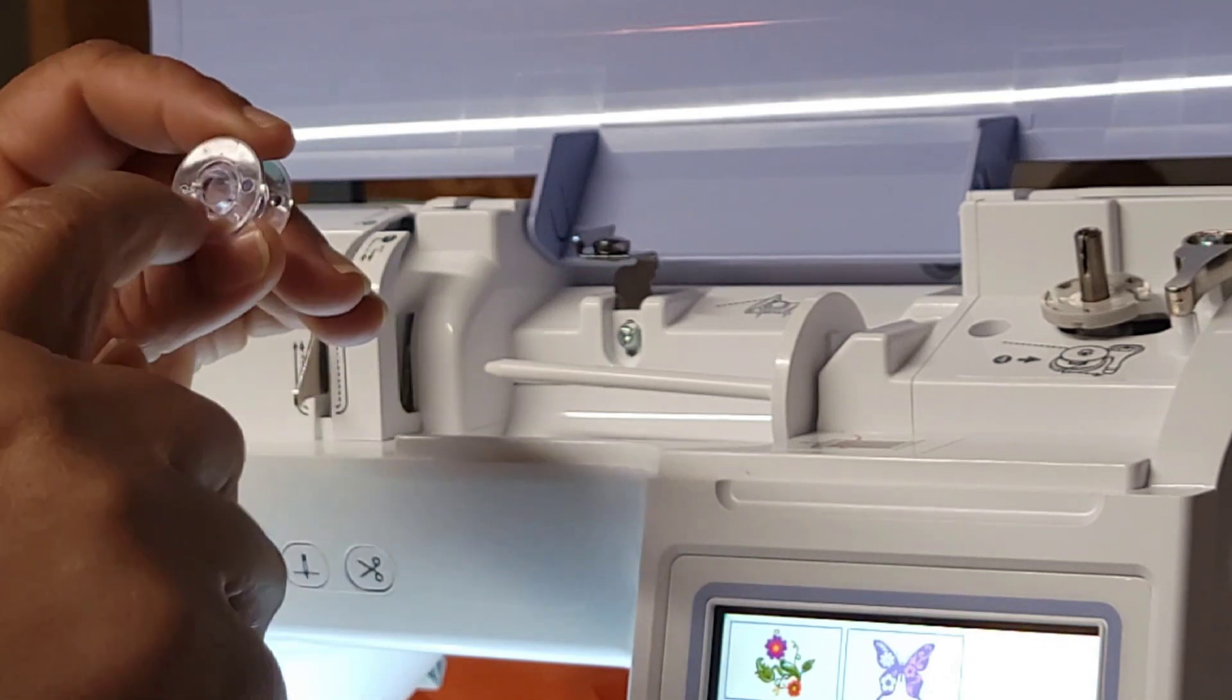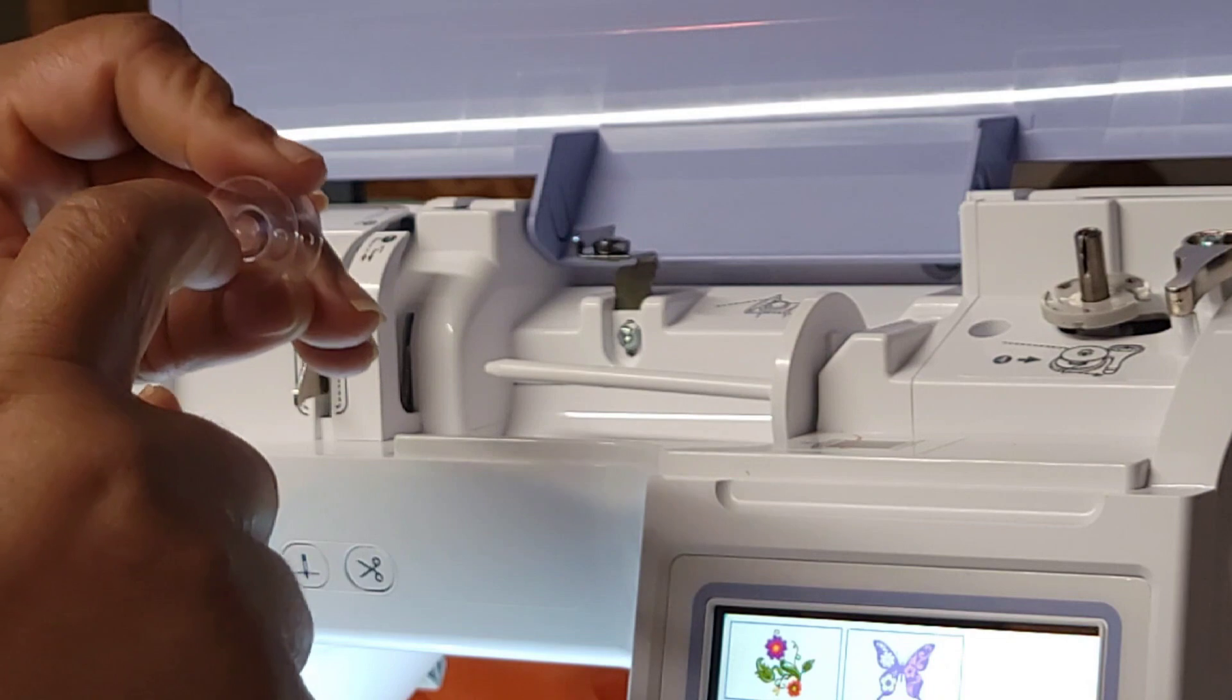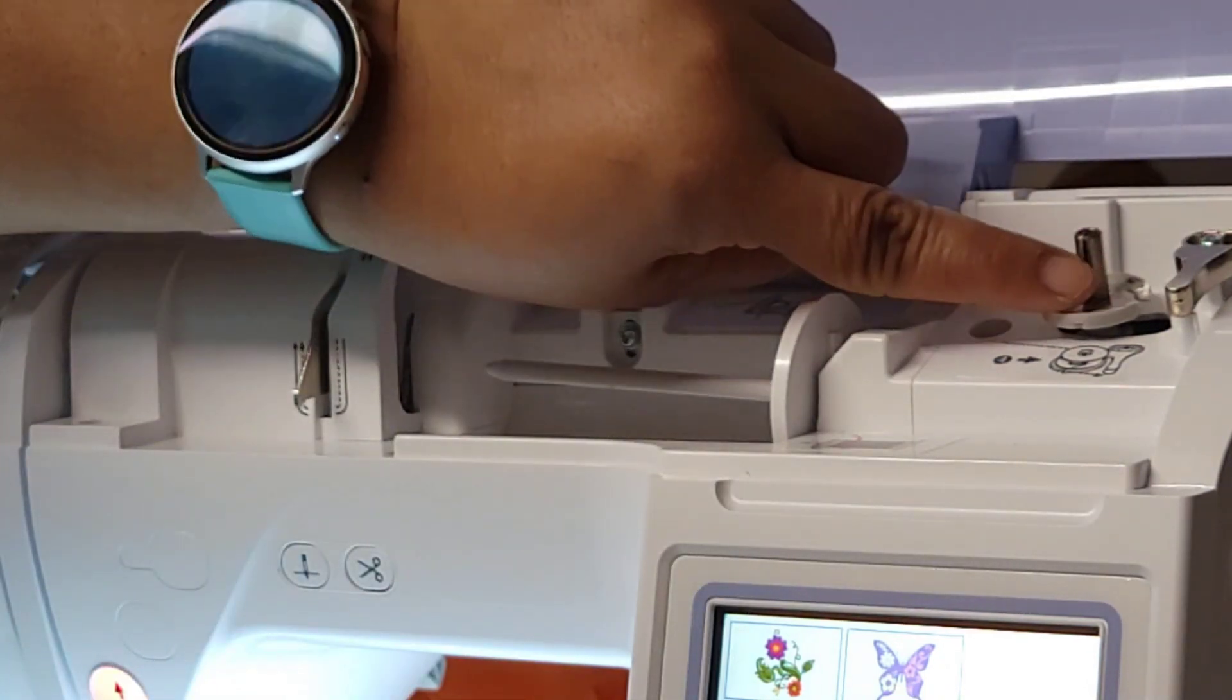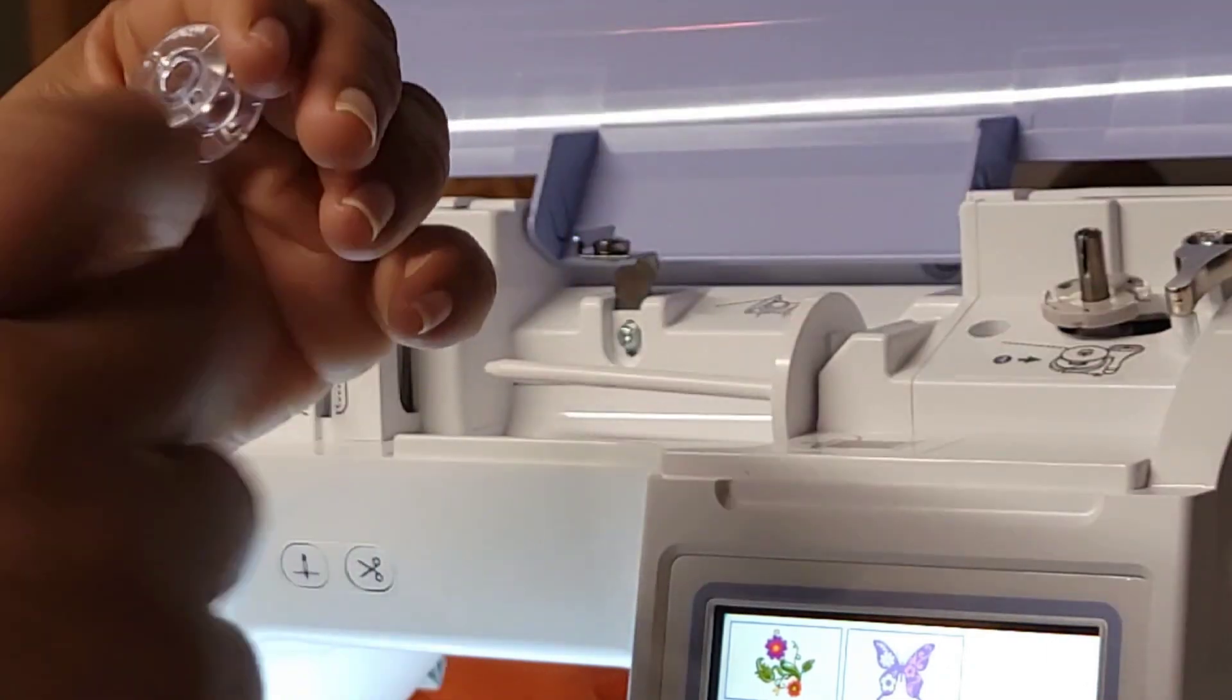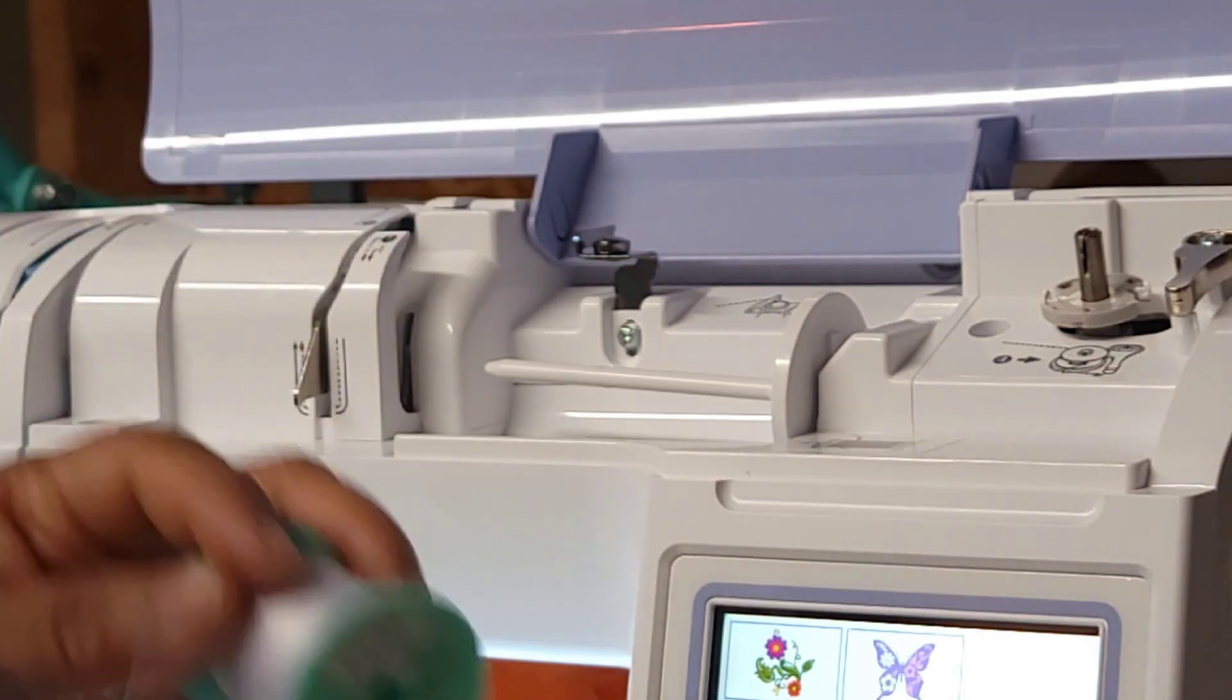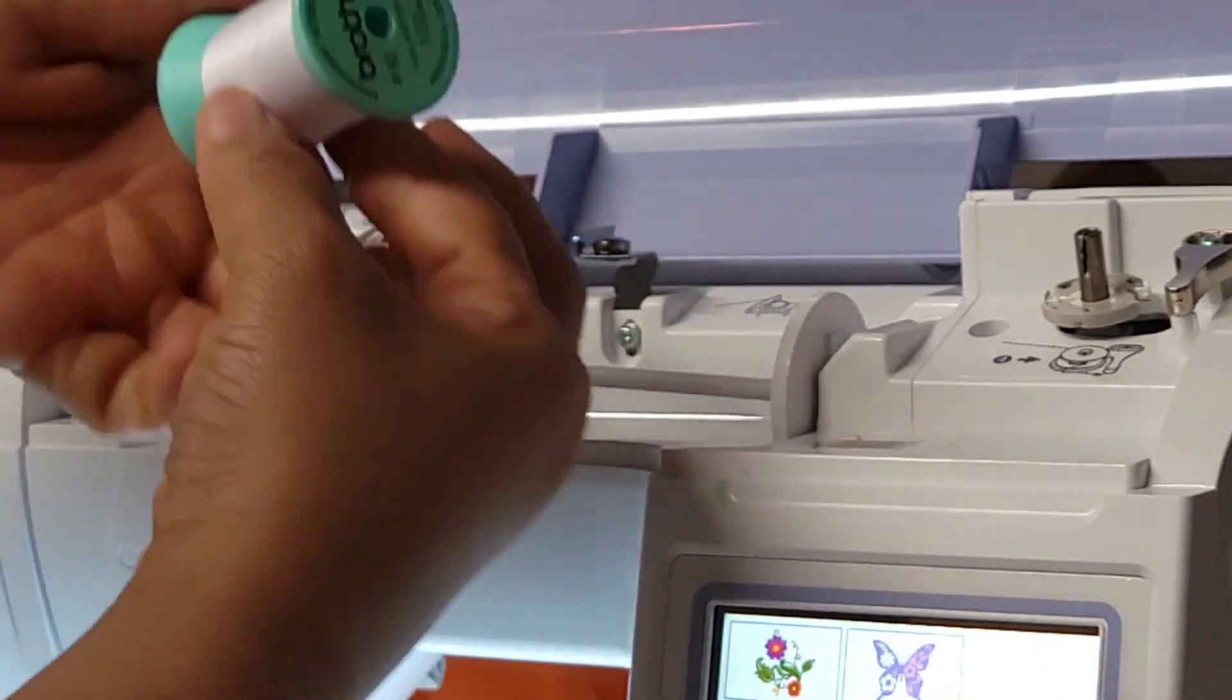On your bobbin thing here, it has a little notch, a little hook, whatever this is called. You're going to line that up in this cut, alright? So first thing is you're going to take your thread. Always make sure that your thread is coming from bottom to top, okay?